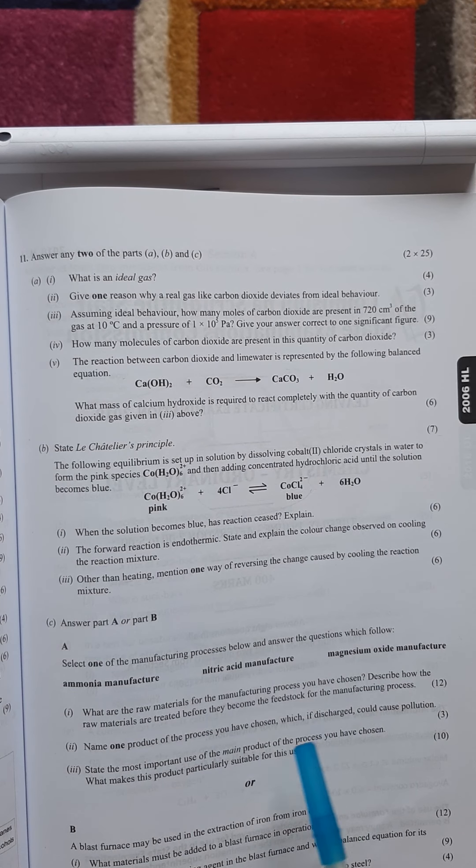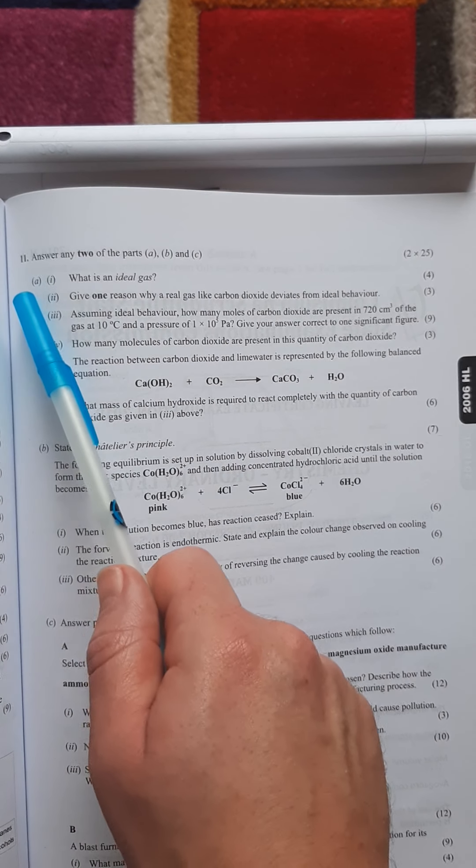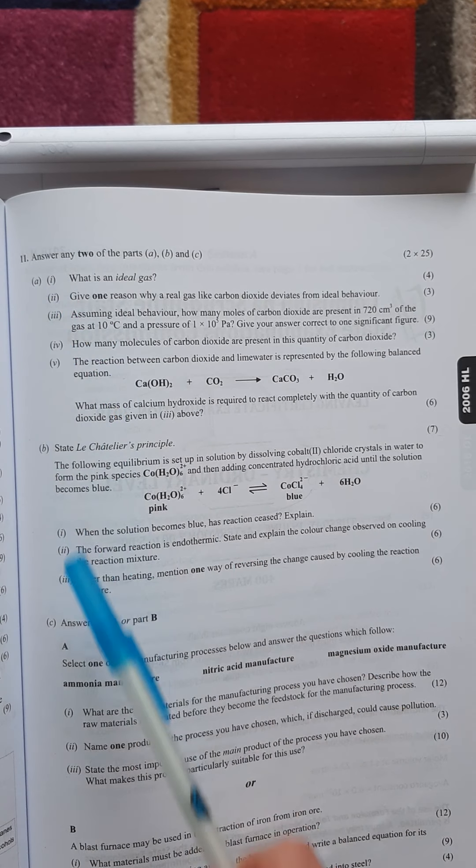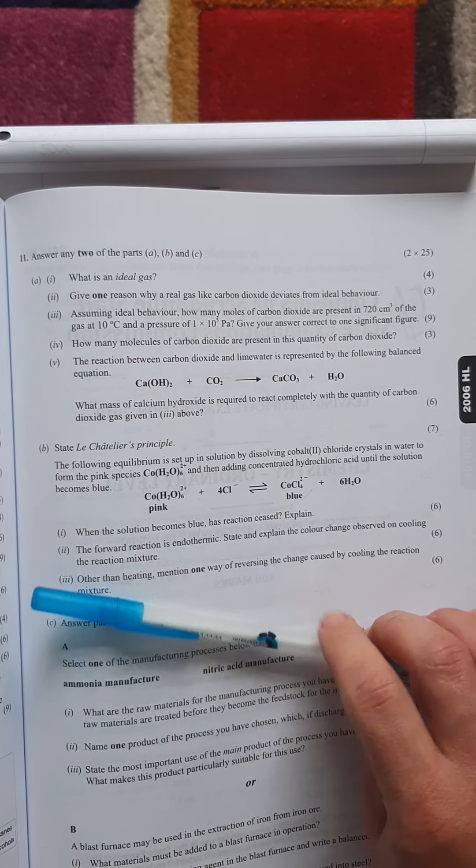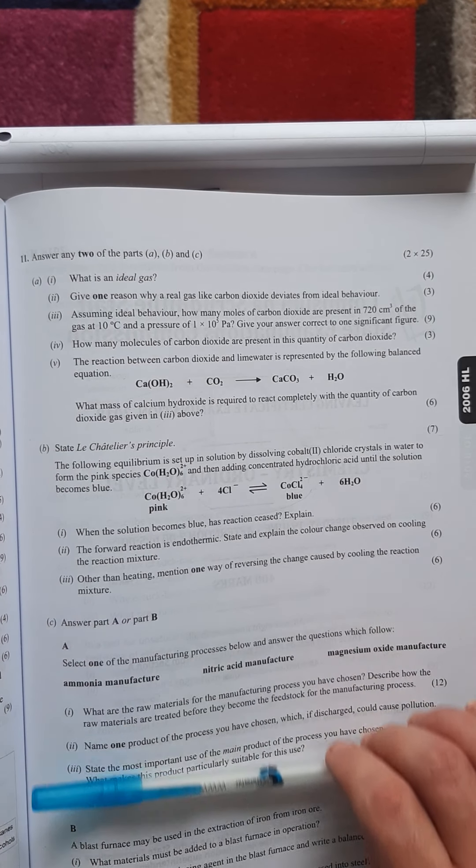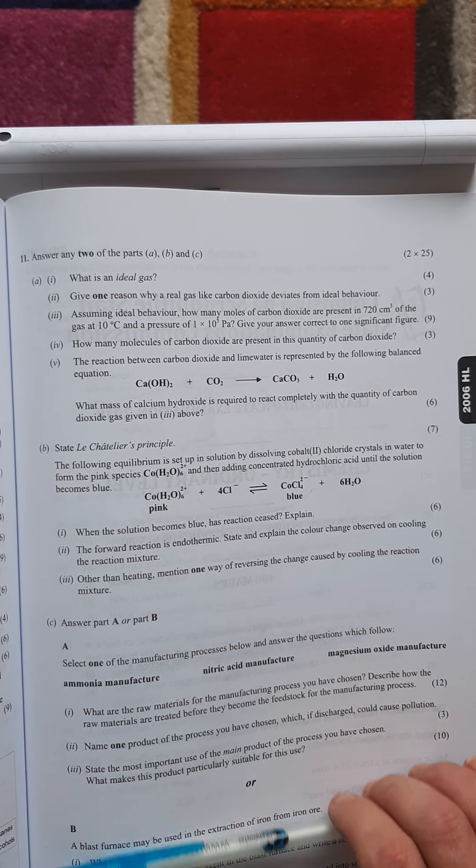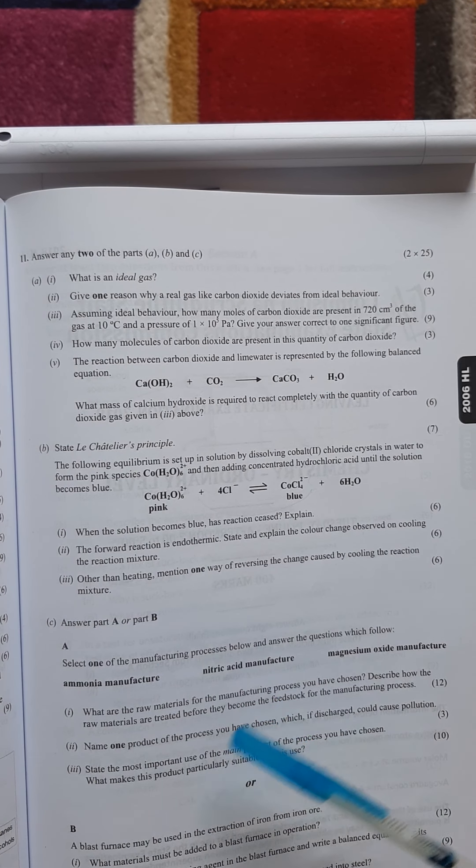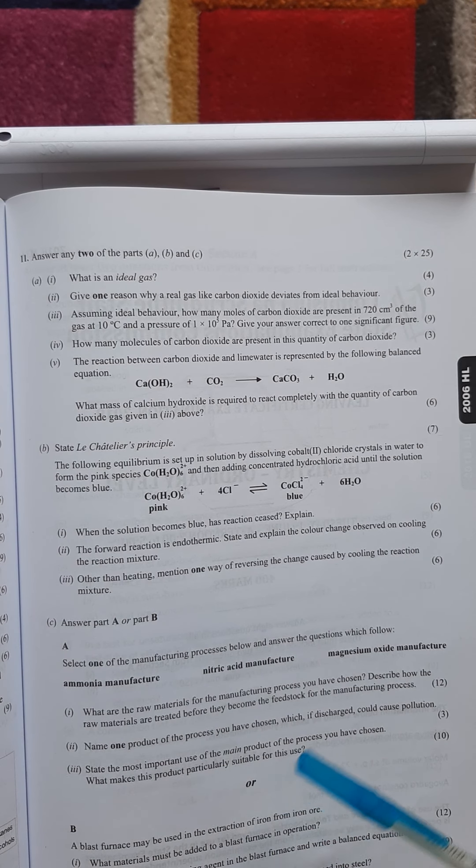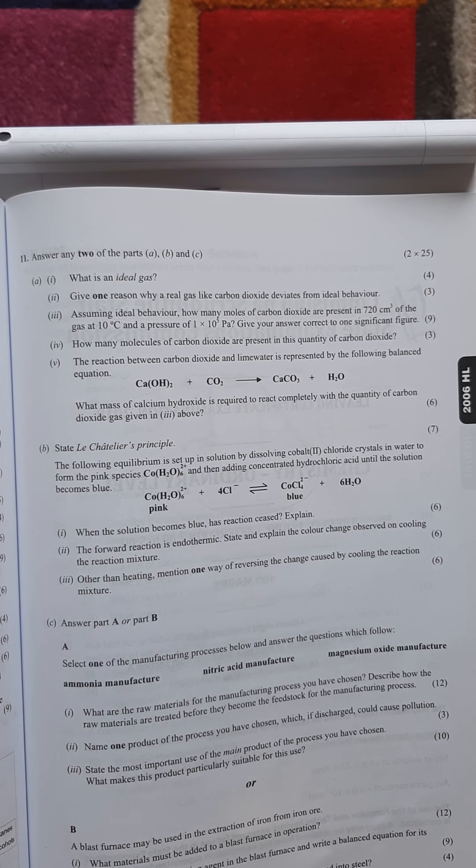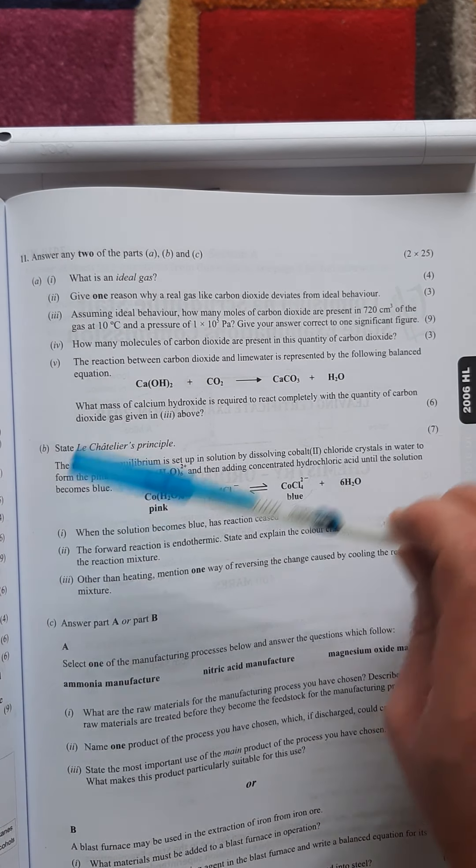Just to give you information on this, for the 2021 paper it's still going to be three parts. Part C here each year up to now was the option. There was industrial chemistry and environmental chemistry in the options, but this year they've gotten rid of the option so it's not on the course.